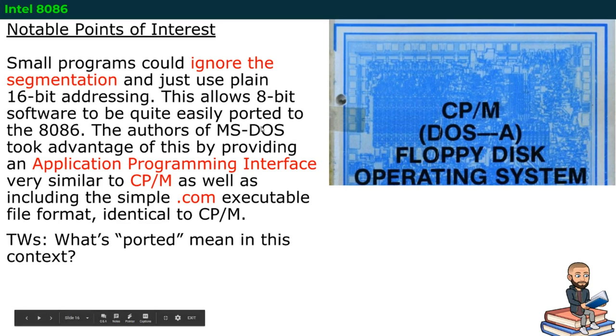One nice thing about the portability of these processors, it says that the authors of MS-DOS took advantage of that by providing an application programming interface, also known as an API, which was very similar to the CPE-slash-M operating system. What this means is if you saw a .com extension, file extension, that was an executable, that was a program that you could run, and therefore, that file format was identical to that CPM machine.